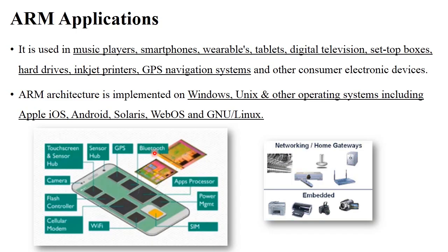Just focus on this image — there is an ARM processor. The ARM processor provides touchscreen and sensor support, then camera, cellular modem, Wi-Fi, SIM options, apps processor, Bluetooth, GPS, and sensor. This kind of functionality is provided by the ARM processor, and that's why it is generally used in different electronics devices.